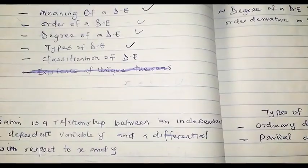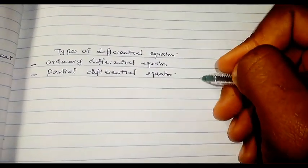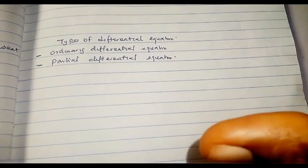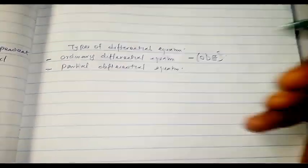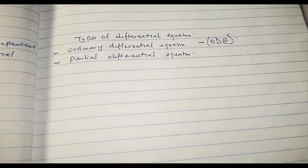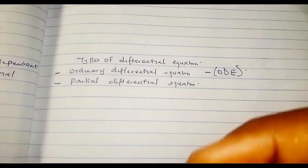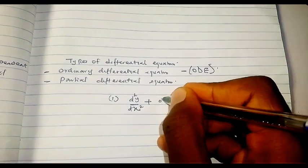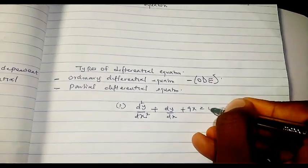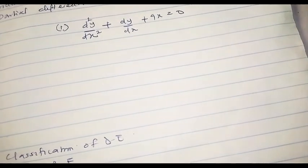We are going to talk about two types of differential equations: the ordinary differential equation and the partial differential equation. In this video, we will focus on the ordinary differential equation, abbreviated ODE. An ordinary differential equation is basically what we have been discussing. For example: d²y/dx² + dy/dx + 9x = 0. An ordinary differential equation has a simple basic relationship between two variables.